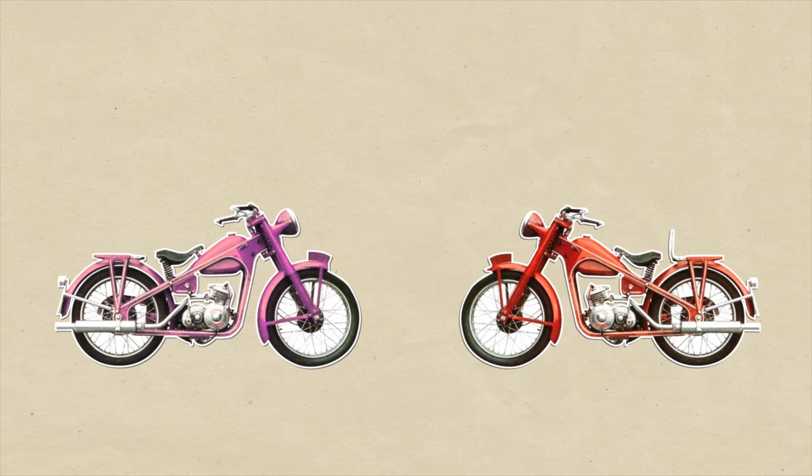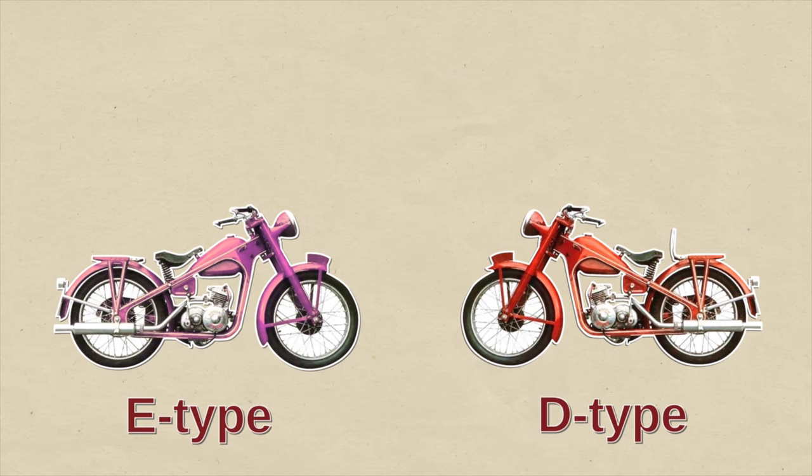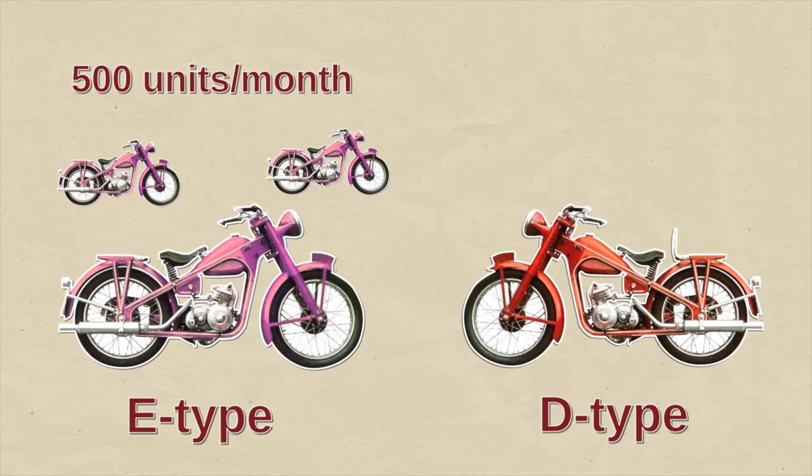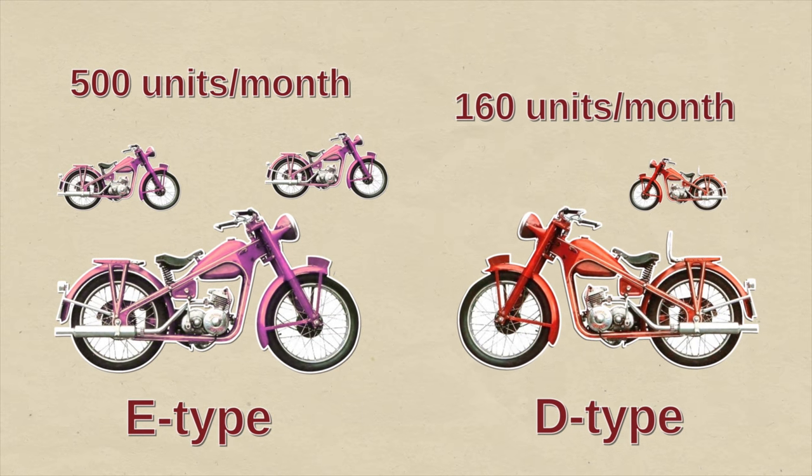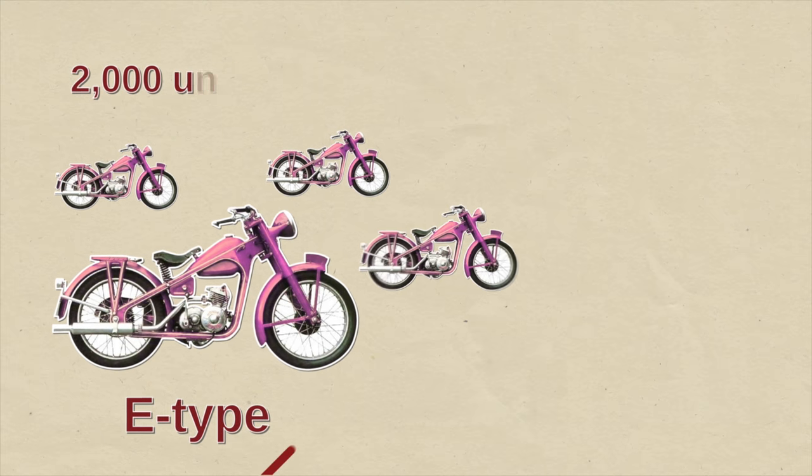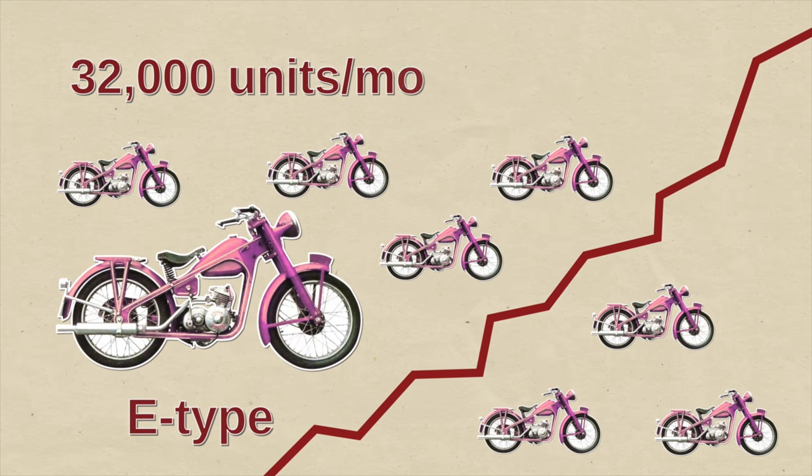One year later, the four-stroke E-Type marks a turning point for Honda. This is the bike Soichiro always wanted to make. It starts shipping 500 units a month compared to the D-Type, which shipped only about 160 per month at its peak. Then it gets fitted with a third gear and orders rise to 2,000 a month. Three years later, orders are at 32,000.